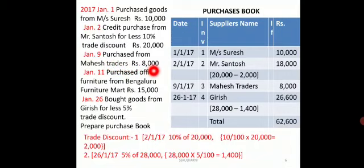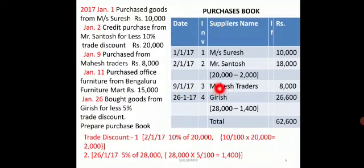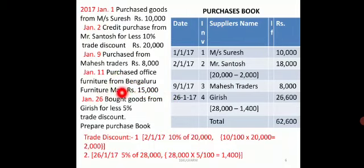On January 9th, purchased from Mahesh ₹8,000 — this refers to goods only. So on 9-1-2017, invoice number 3, supplier is Mahesh Traders, amount ₹8,000. On January 11th, office furniture is purchased on credit — this is a credit purchase of an asset, so it will not appear in the purchase book and goes to journal proper instead.